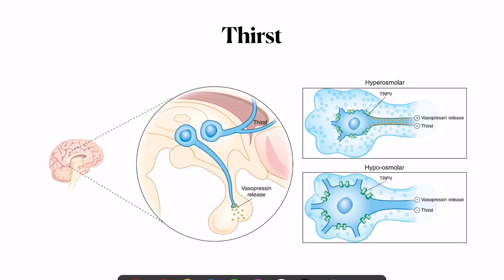If normal cell volume is not restored, neurological symptoms or neurological damage will occur. The body takes all steps to preserve brain function, since any effect on the brain will permanently cause problems to the organism.